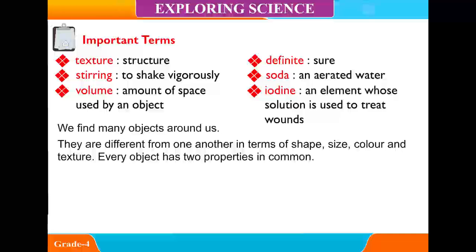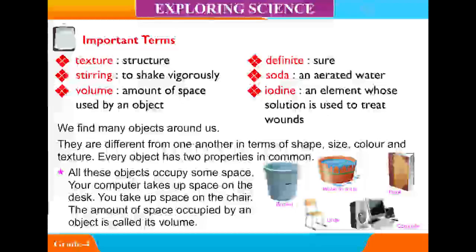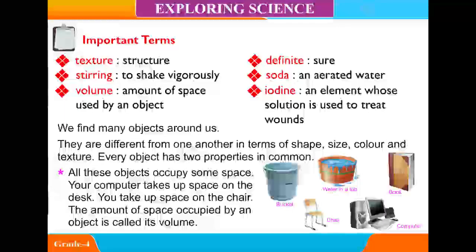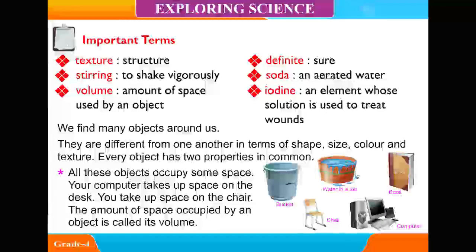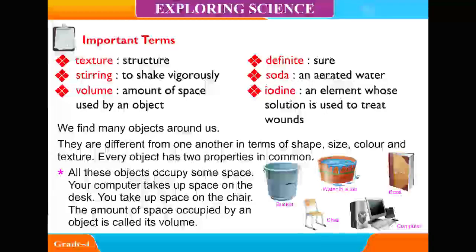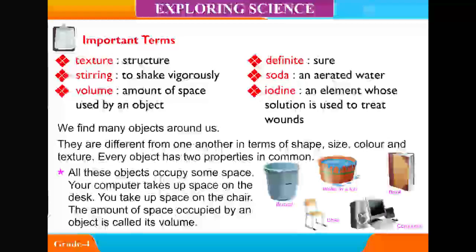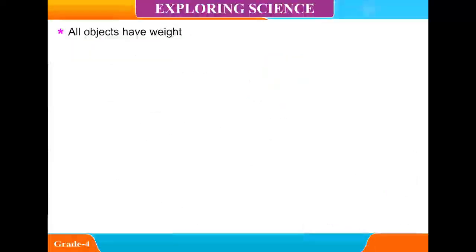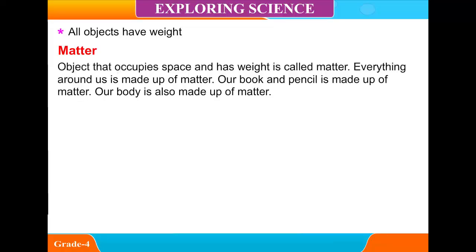Every object has true properties in common. All these objects occupy some space. Your computer takes up space on the desk. You take up space on the chair. The amount of space occupied by an object is called its volume. All objects have weight. An object that occupies space and has weight is called matter.